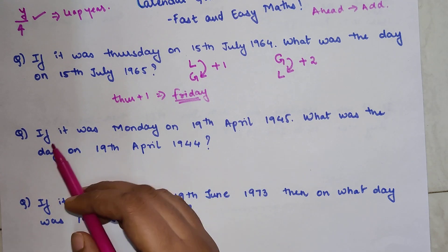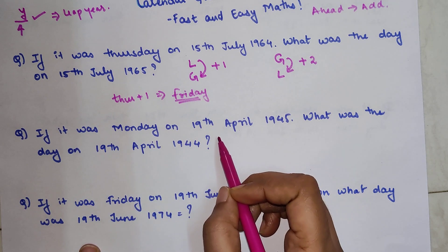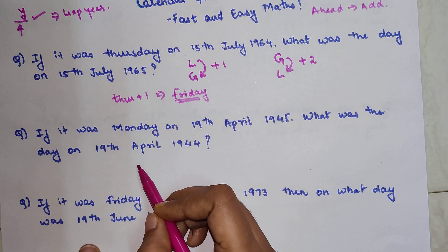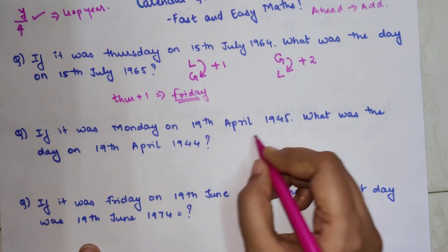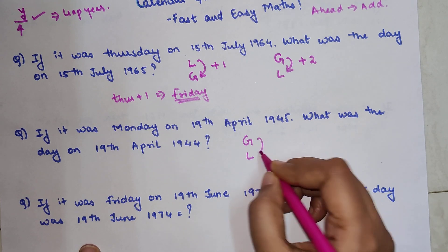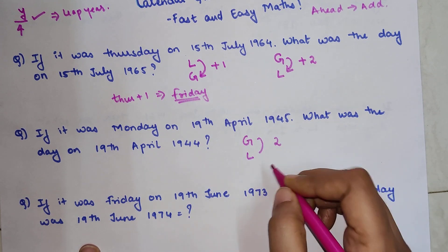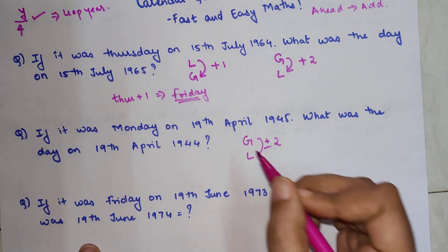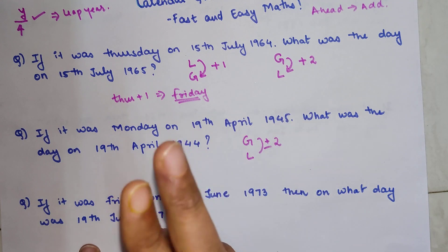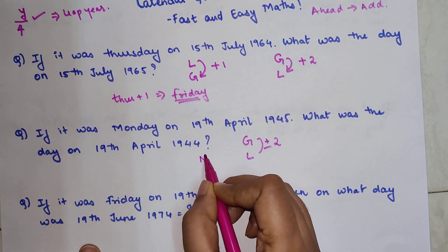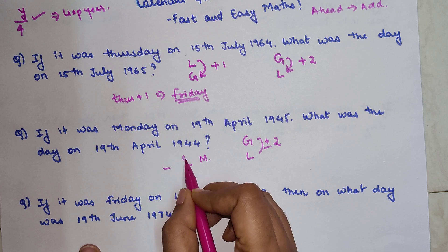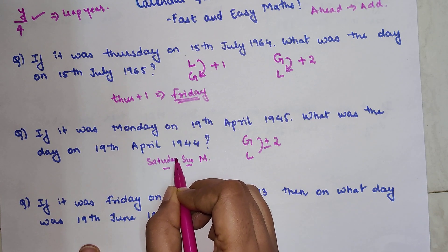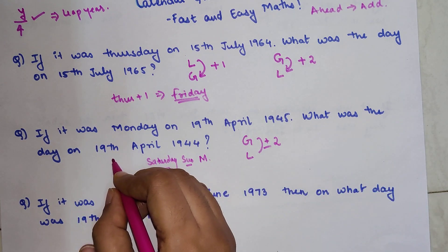The next question: if it was Monday on 19th April 1945, what was the day on 19th April 1944? Now 1945 is a general year and 1944 is a leap year. Since we are going behind, we subtract 2. So Monday minus 1 is Sunday, minus 2 is Saturday. Saturday is your answer for this question.